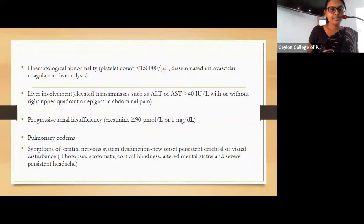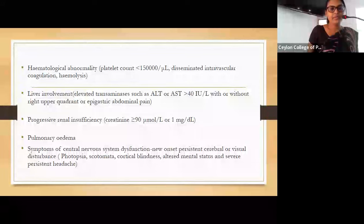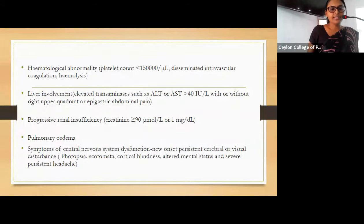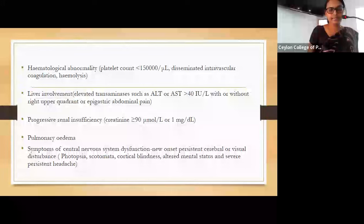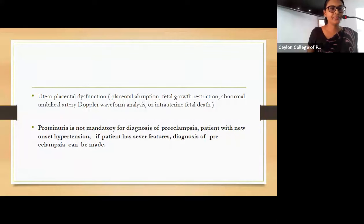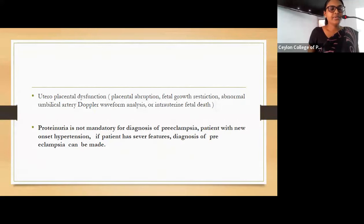CNS dysfunction indicators include new onset persistent cerebral or visual disturbance with photopsia, scotomata, cortical blindness, altered mental status, and severe persistent headache. Uteroplacental dysfunction includes placental abruption, fetal growth restriction, abnormal umbilical artery Doppler waveform analysis, or intrauterine fetal death.